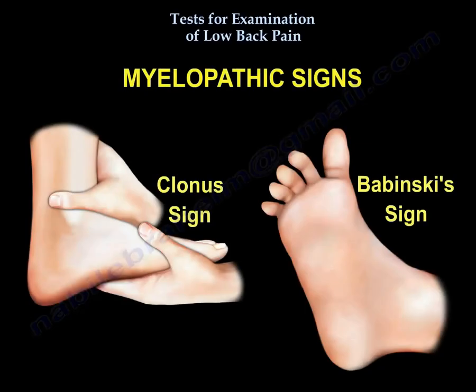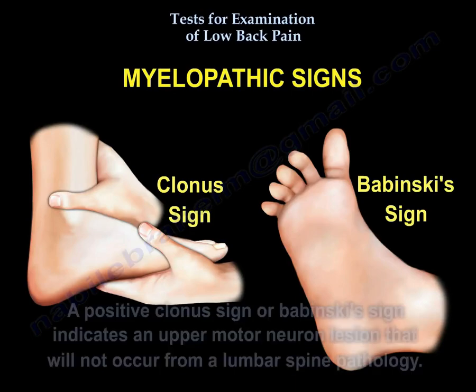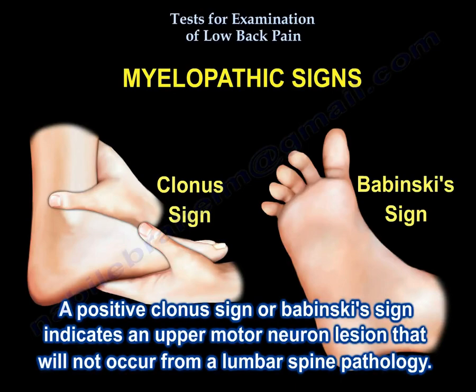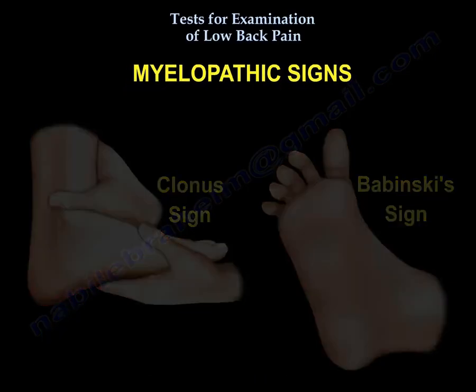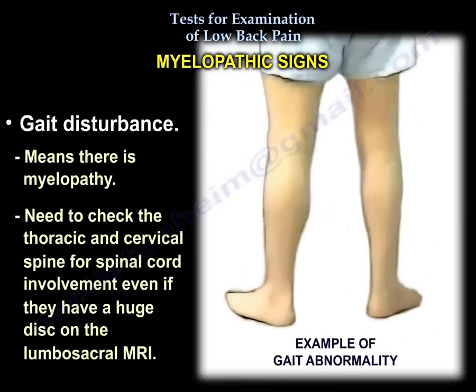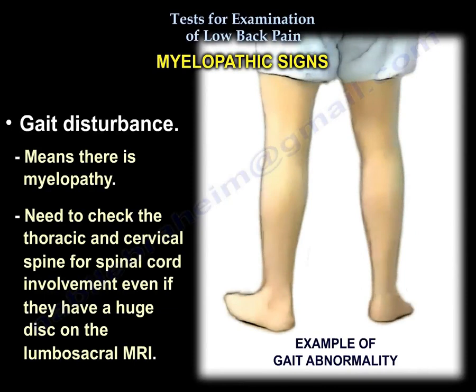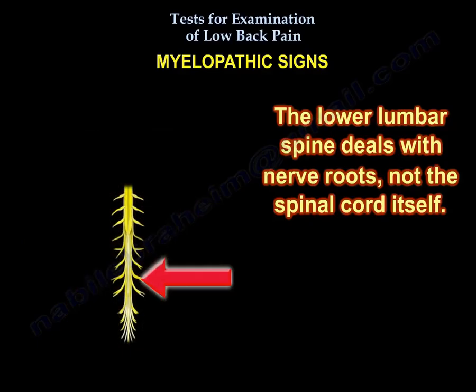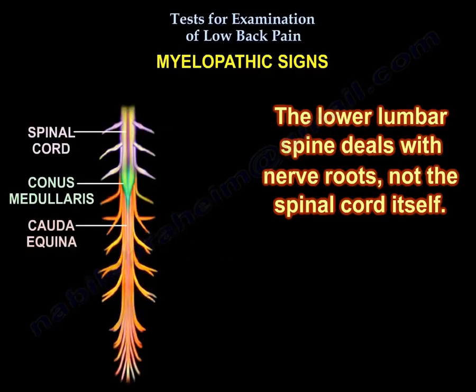Myelopathy signs include the Clonus sign and the Pepinowski sign. A positive Clonus or Pepinowski sign indicates an upper motor neuron lesion, which does not occur from lumbar spine pathology. Gait disturbance also suggests myelopathy. You must check the thoracic and cervical spine for spinal cord involvement even if there is a large disc on the lumbosacral MRI, because the lower lumbar spine deals with nerve roots, not the spinal cord.